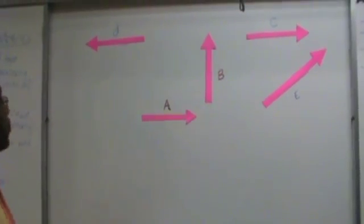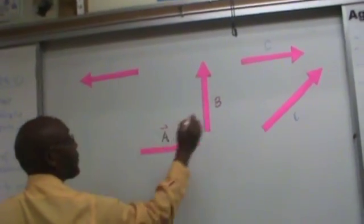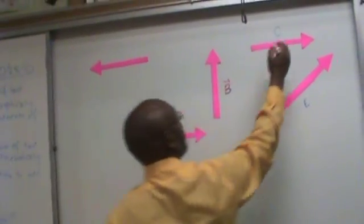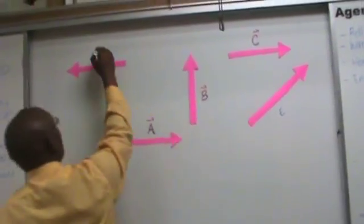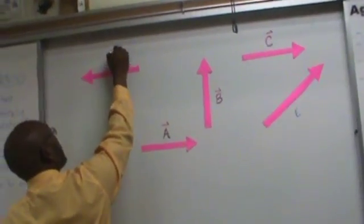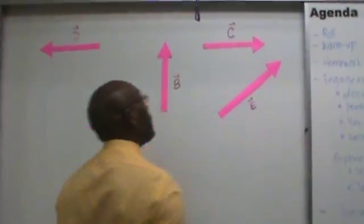As you can see here on the board, I have five vectors: vector A, vector B, vector C, vector D, and vector E.